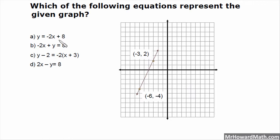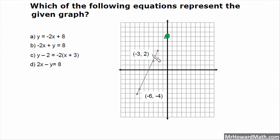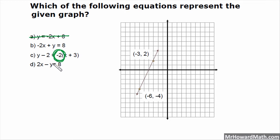Last example: which of the following equations represents the given graph? We have a multiple choice question, so let's use our multiple choice test-taking skills. I can see just looking at this line, my y-intercept is up here somewhere — so I have a positive y-intercept. My slope is going up, so I have a positive slope. I'm going to try to eliminate any equations with a negative slope. Option A has a negative slope of negative 2, so I'm marking that one out. Option C has a negative slope — it's written in point-slope form — so I can mark that one out too.